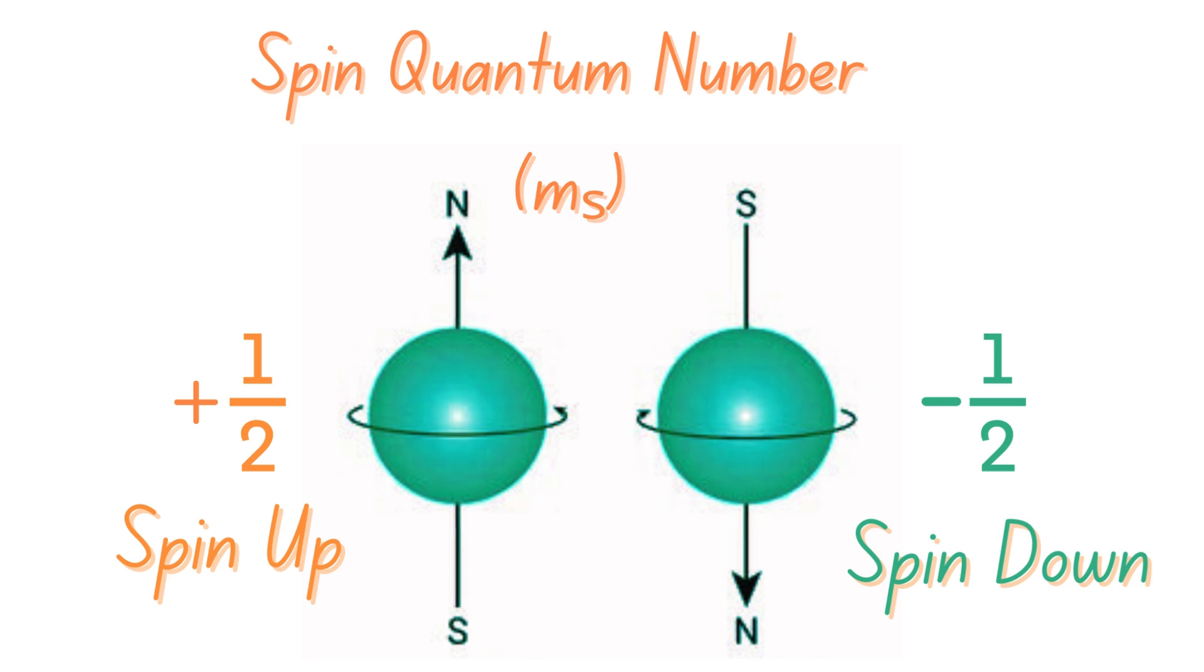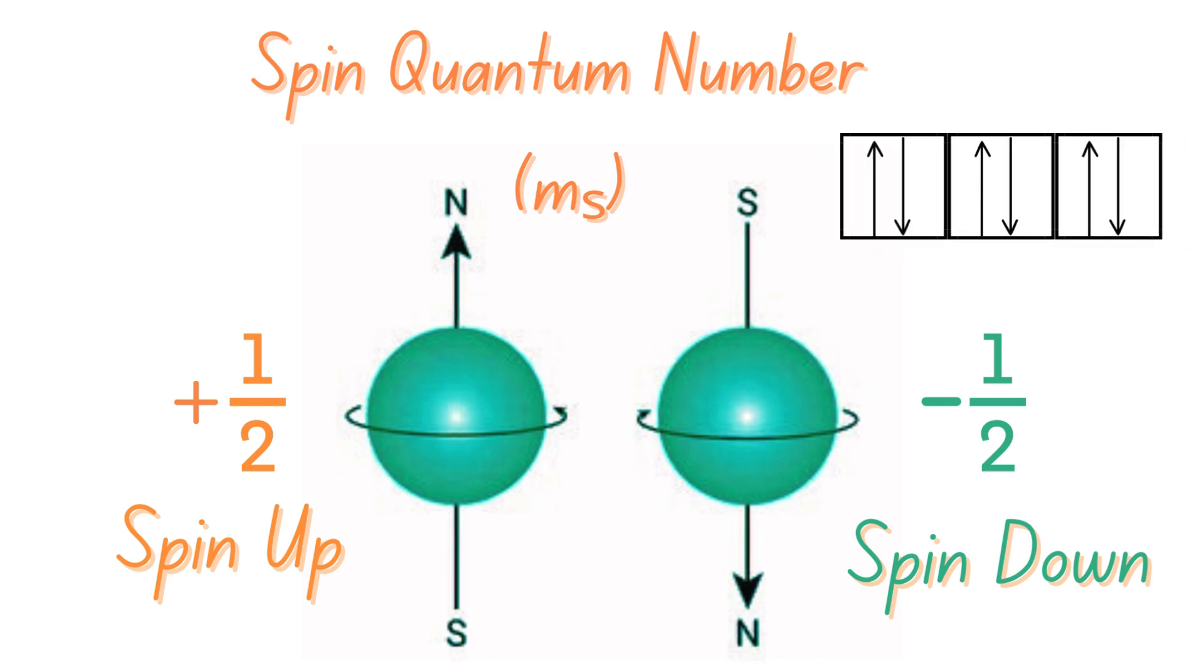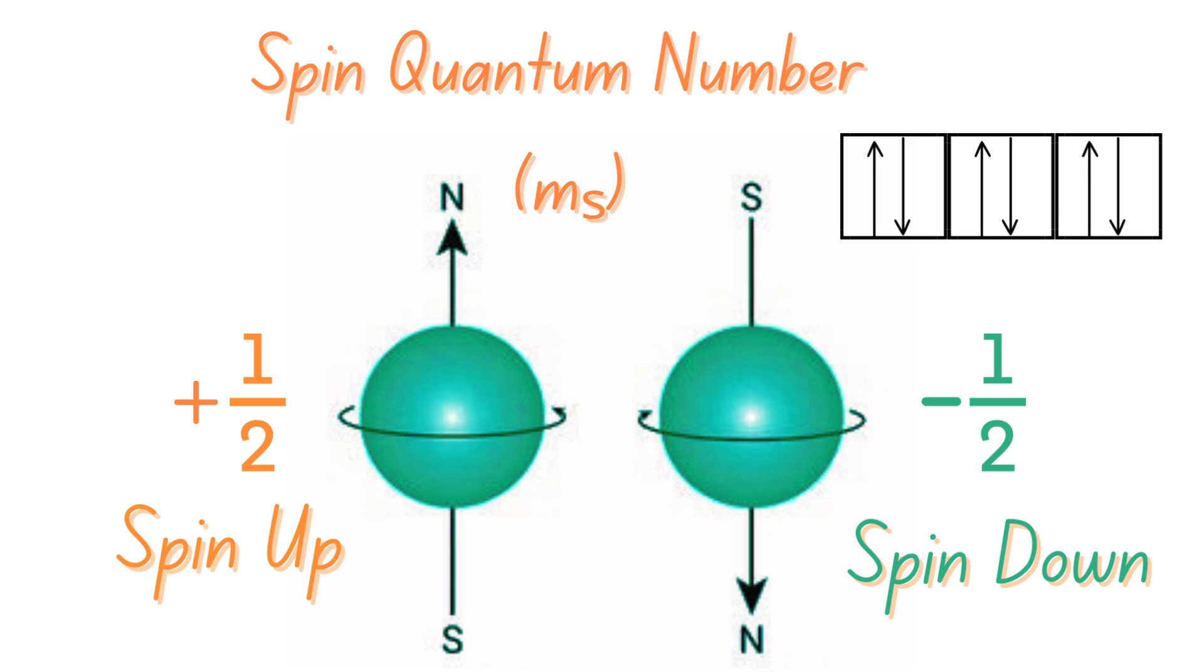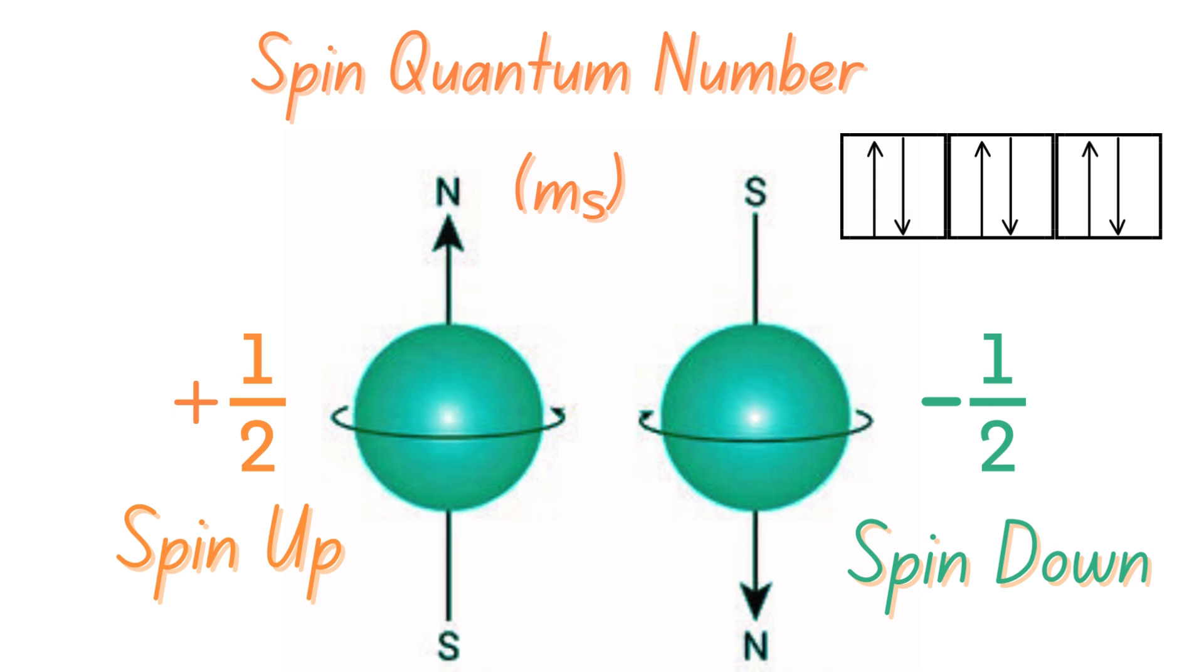Two electrons in the same orbital must have opposite spins, and this follows Pauli's exclusion principle, which states that no two electrons in the same atom can have identical sets of quantum numbers. These opposite spins help minimize electron repulsion in an orbital. So the spin quantum number distinguishes the two possible states of an electron within the same orbital, and it ensures that each electron in an atom has a unique set of quantum numbers.